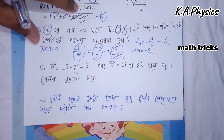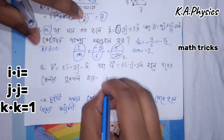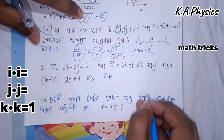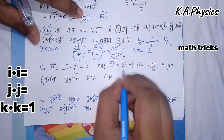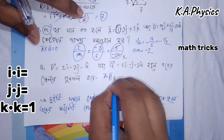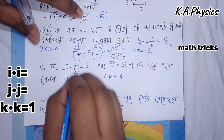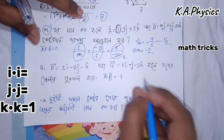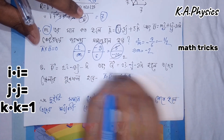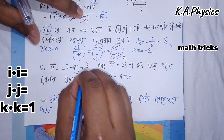The scalar product shortcut: a vector dot v vector — i·i equals 1, j·j equals 1. The calculation gives minus one plus three into one equals three.